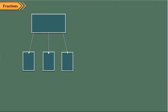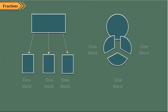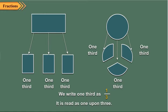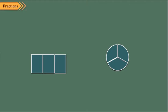Now observe the shapes shown here. Each shape has been divided into three equal parts. Each part is one third of the whole. We write one third as one upon three, and it is read as one upon three. When you add these parts again, you get a whole. So three one-thirds together make a whole.